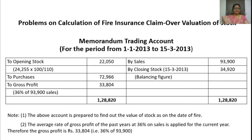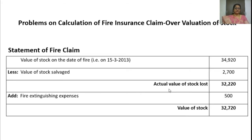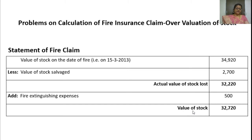We now find the claim amount. First, find the closing stock on the date of fire. Then deduct the actual value of stock salvaged, which is Rs. 2,700, to get the actual value of stock lost. The value of stock which can be claimed is Rs. 32,720. So, the fire insurance claim amount is Rs. 32,720.